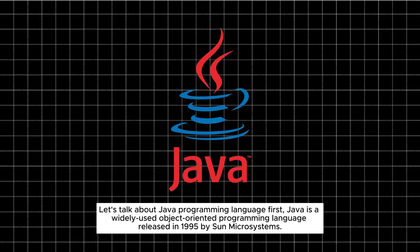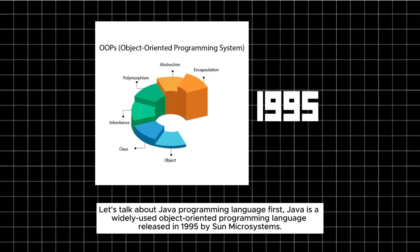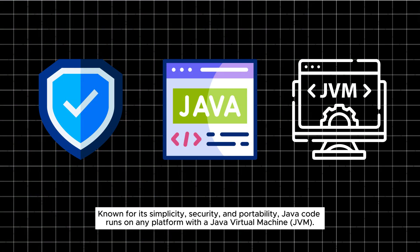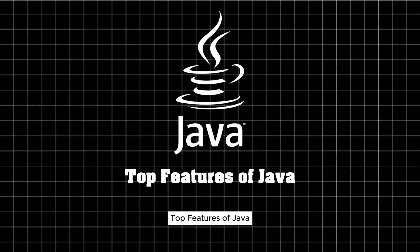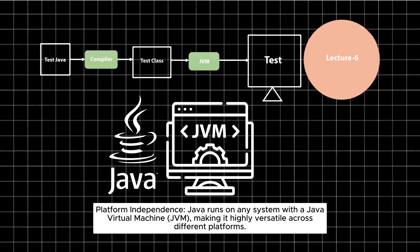Let's talk about Java first. Java is a widely used object-oriented programming language released in 1995 by Sun Microsystems, known for its simplicity, security, and portability. Java code runs on any platform with a Java Virtual Machine (JVM). Top features of Java include platform independence — Java runs on any system with a JVM, making it highly versatile across different platforms.